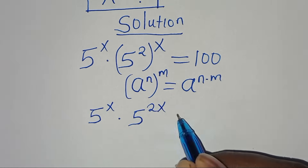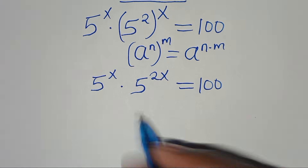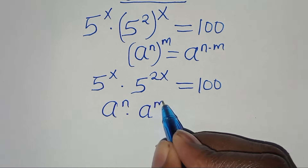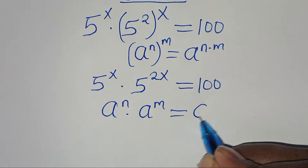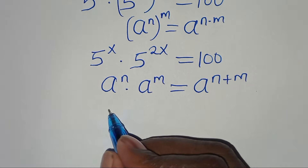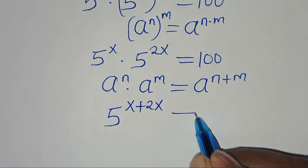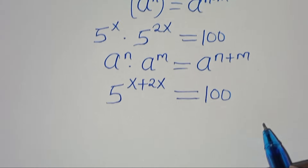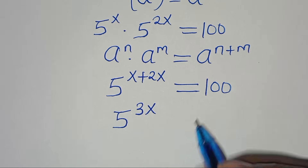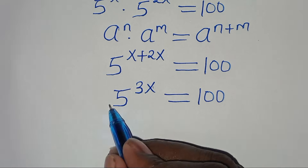So 5^x times 5^(2x) is in the form a^n times a^m, which equals a^(n+m). Applying this exponent property, we have 5^(x + 2x) = 100, which simplifies to 5^(3x) = 100.